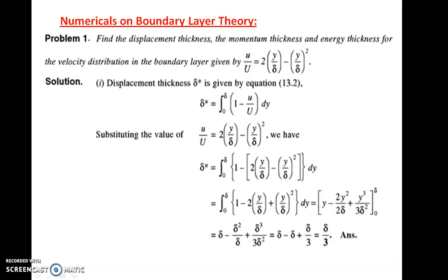First, the displacement thickness. The formula for displacement thickness δ* is equal to the integral from 0 to δ of (1 - u/U) dy. Substituting the velocity profile u/U = 2(y/δ) - (y/δ)², integrating over 0 to δ and applying the limits, the answer for displacement thickness comes out as δ/3. So the displacement thickness is one-third of the boundary layer thickness.